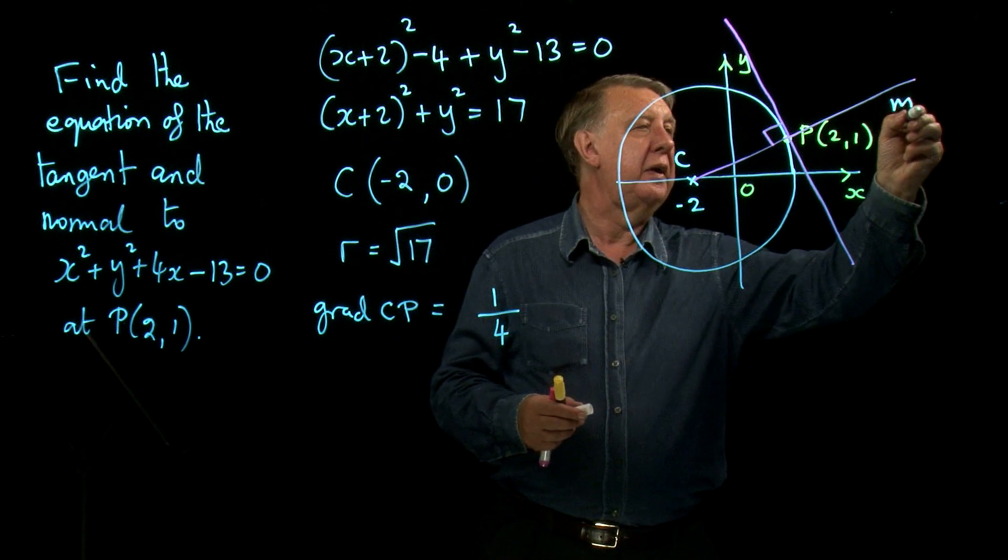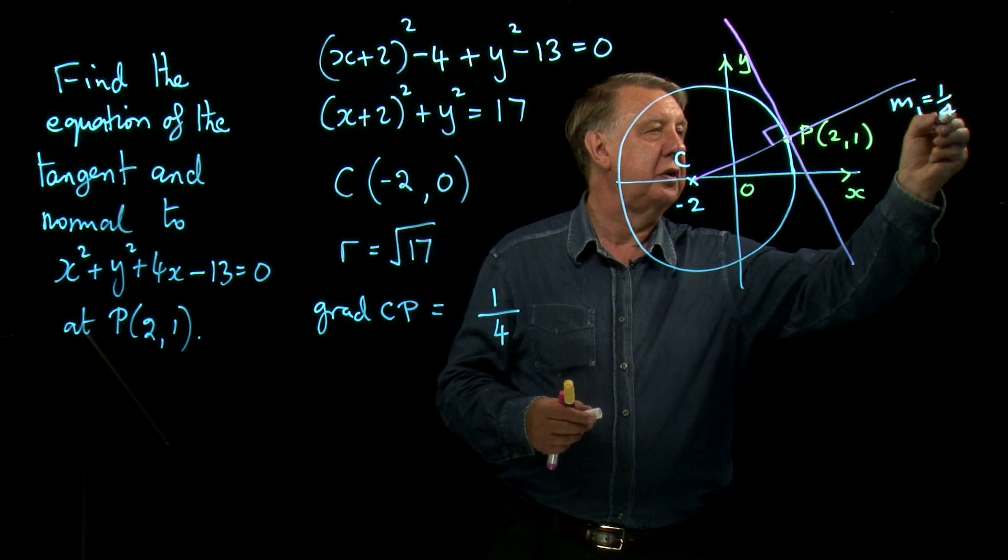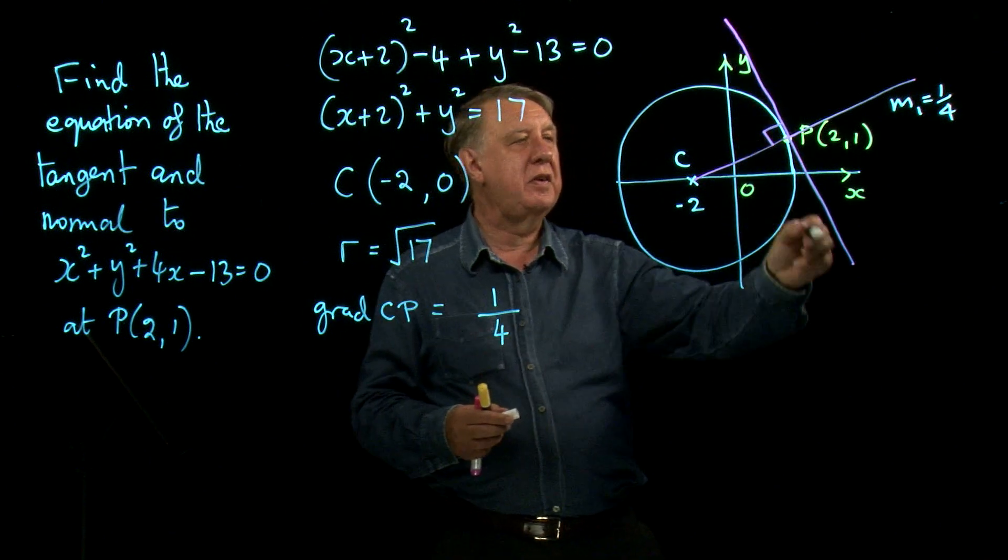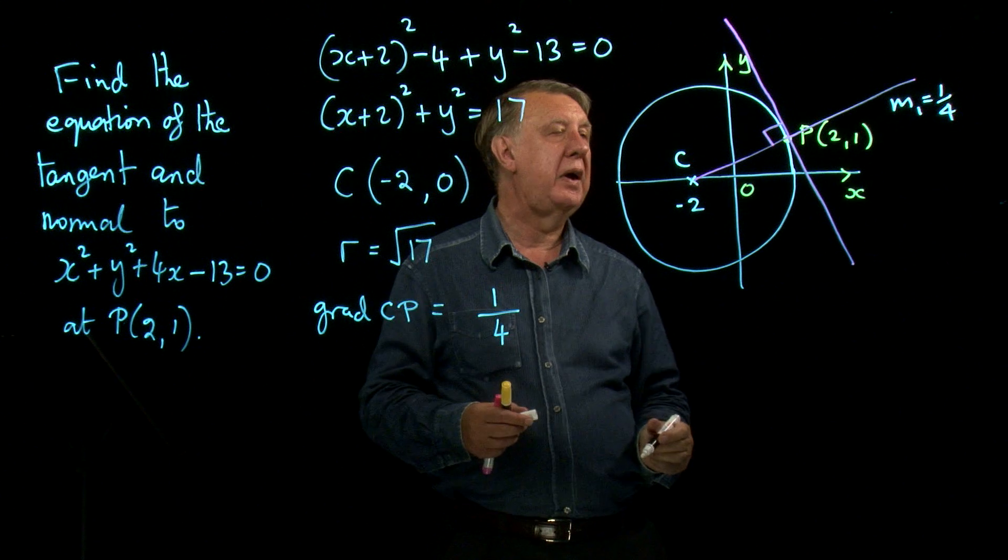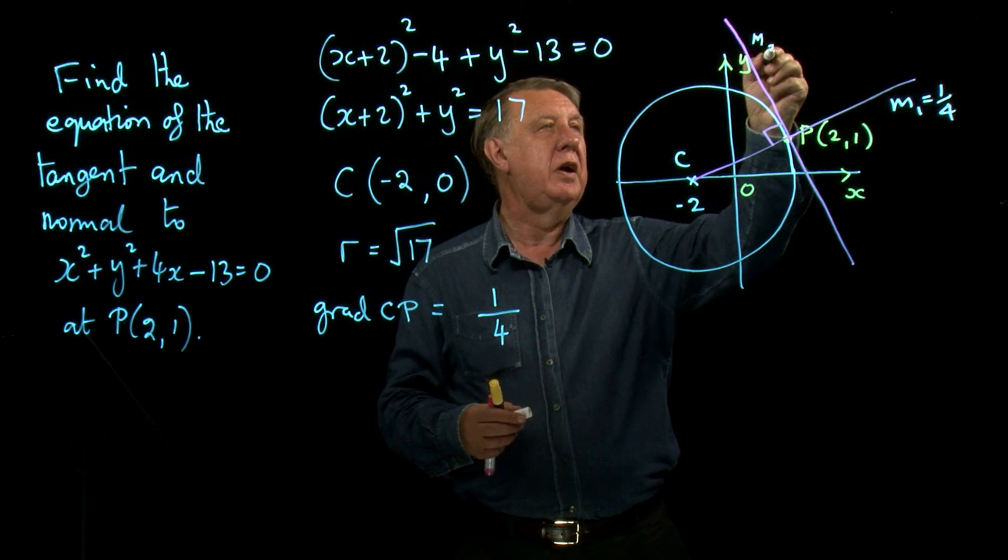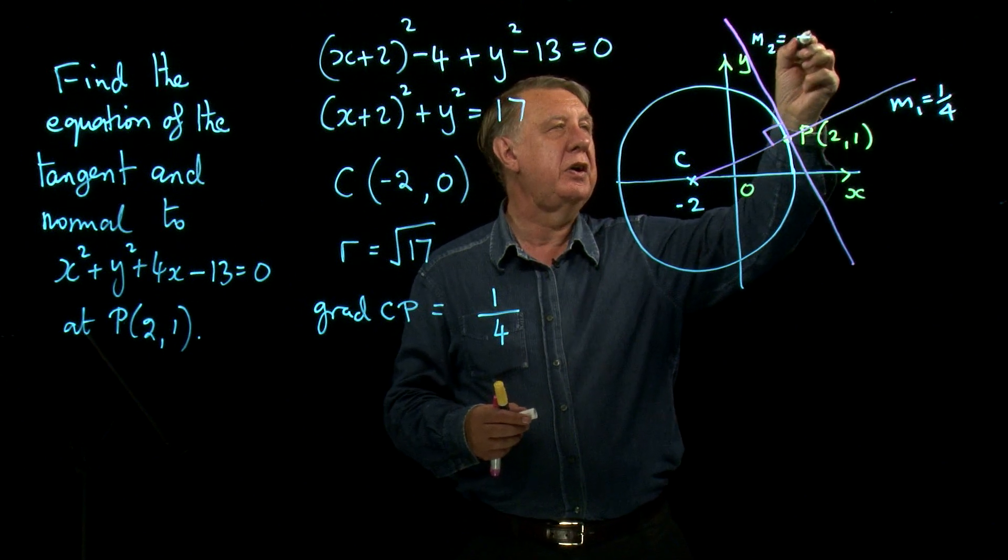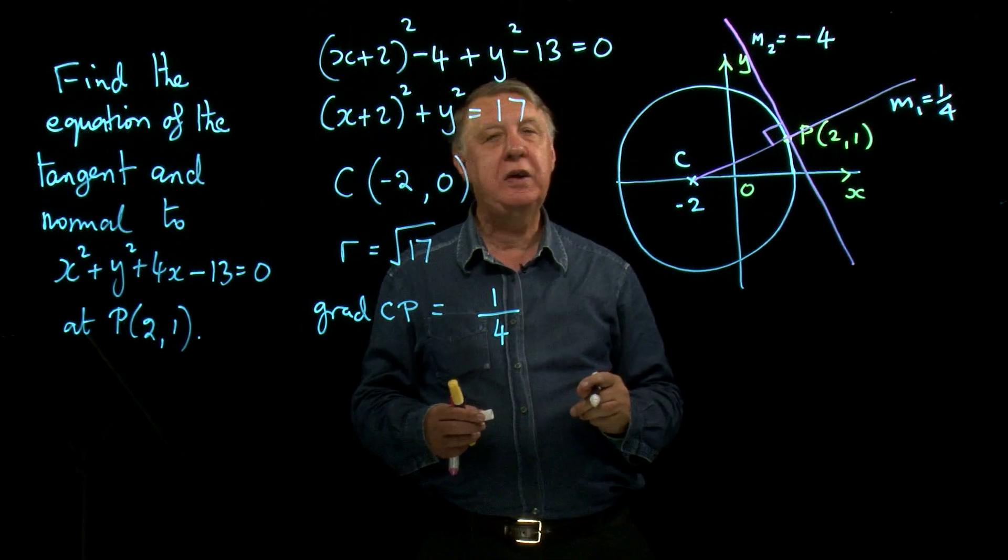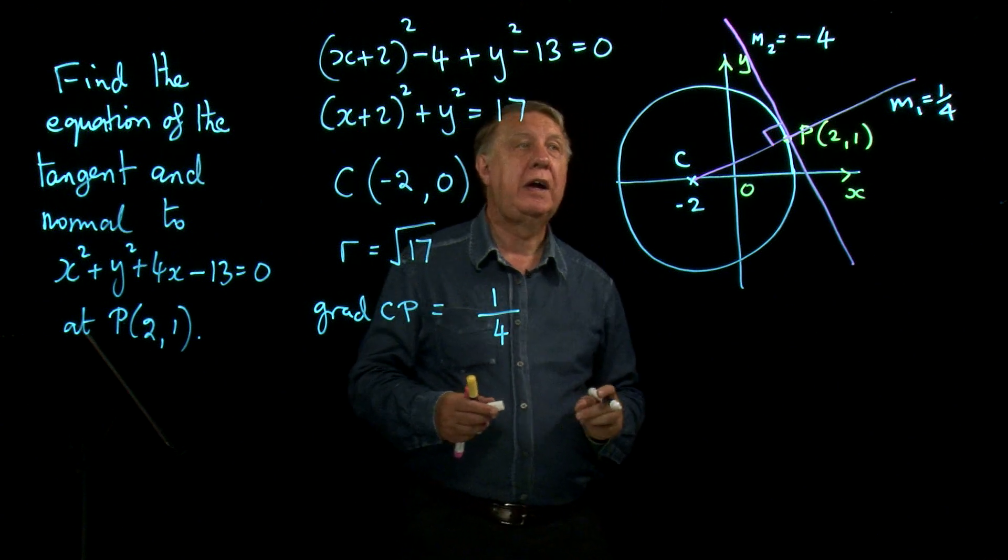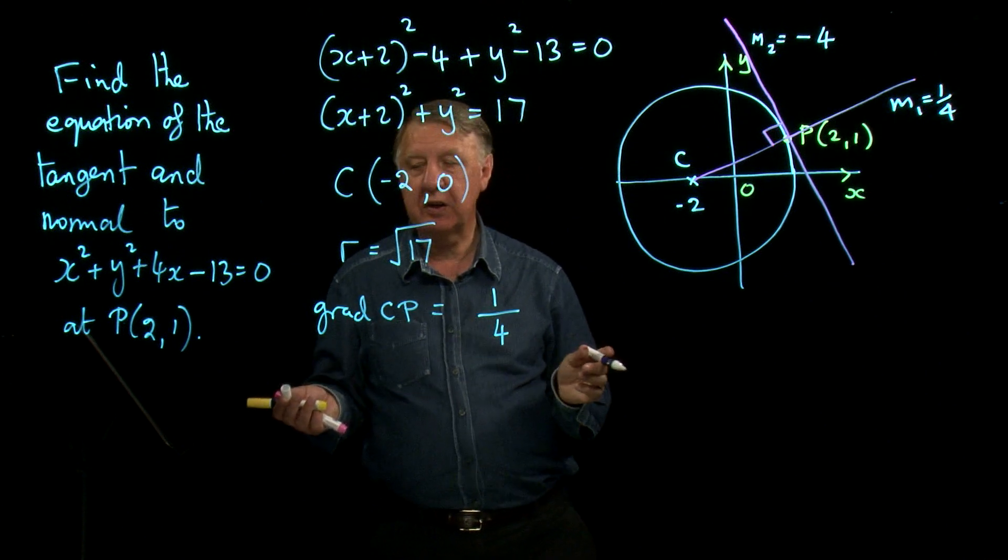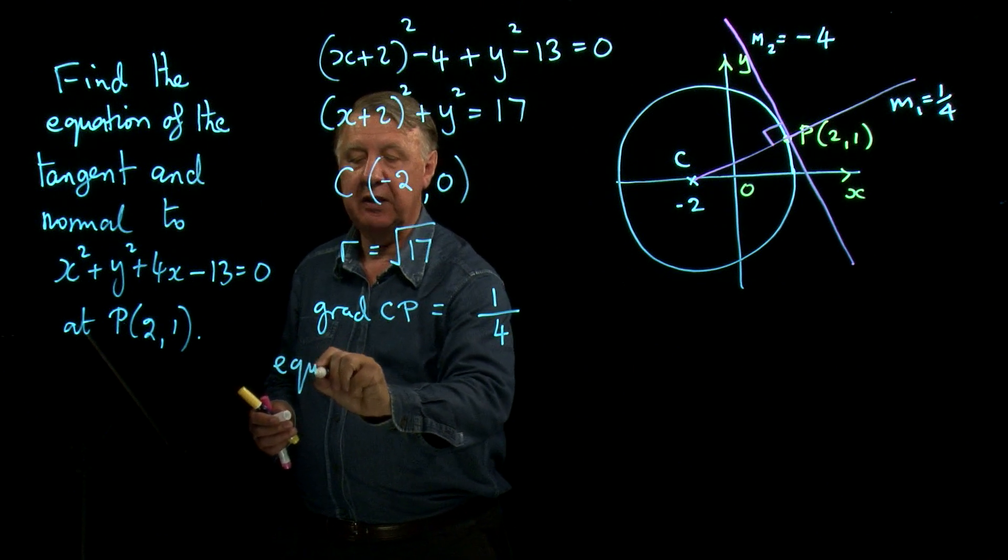So if I call that M1, that's a quarter. That means then that the tangent will have a perpendicular gradient. And remember the rule, you invert this fraction and change the sign. So the gradient of the tangent is negative 4. And that's all the information I need. So I can do the equation of the tangent.